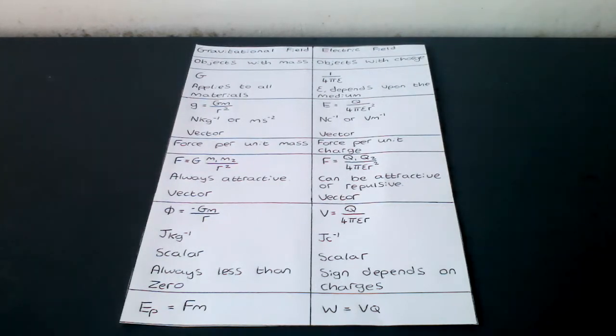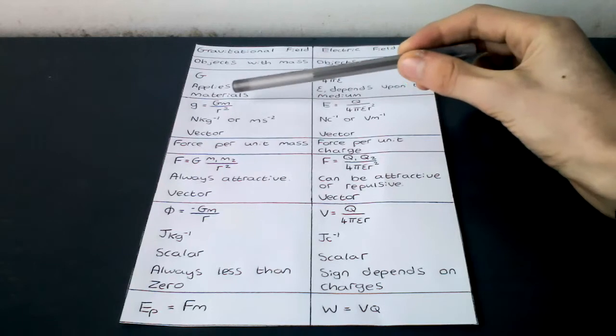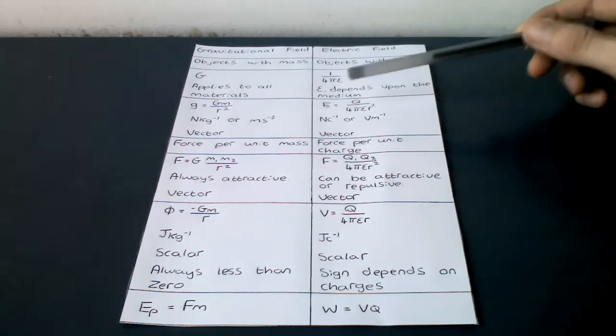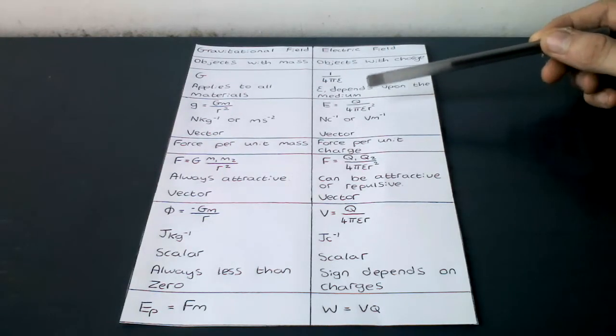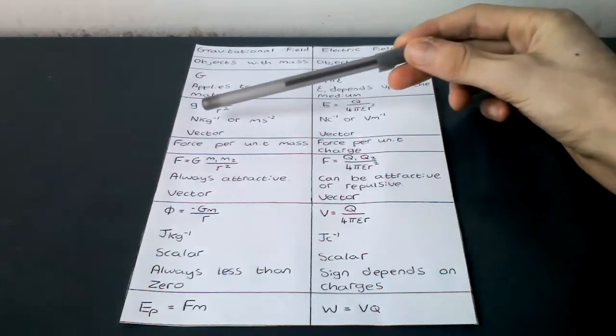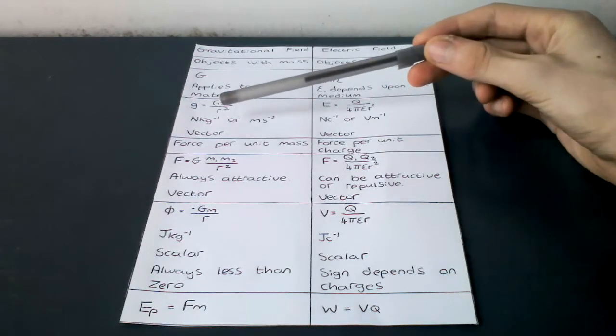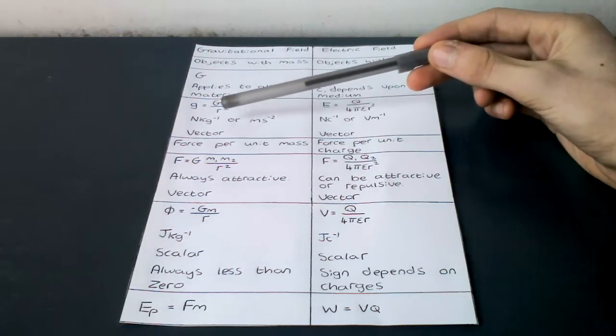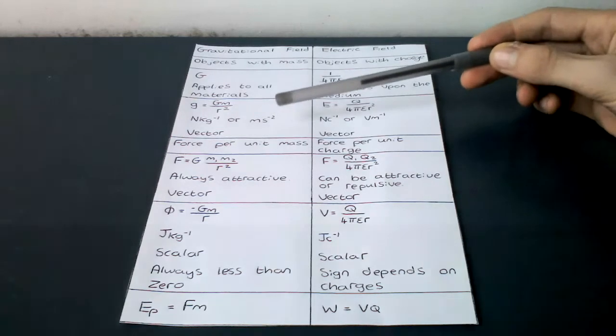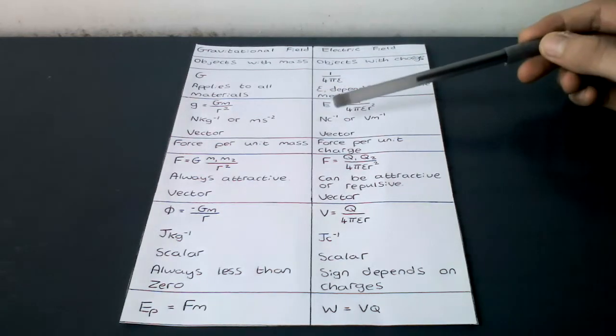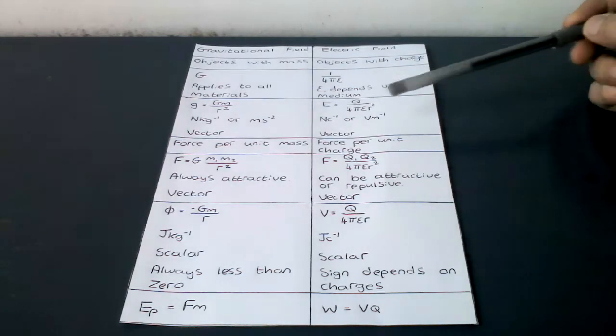Field strength in radial field: g equals gm over r squared, e equals q over 4 pi epsilon r squared. The units are newton kilograms to the minus 1 or ms to the minus 2, nc to the minus 1 or vm to the minus 1.